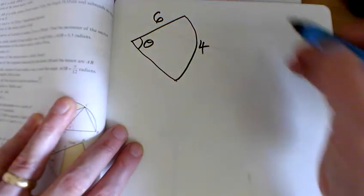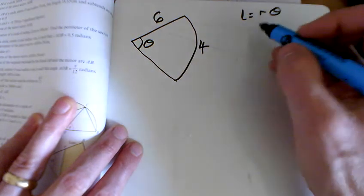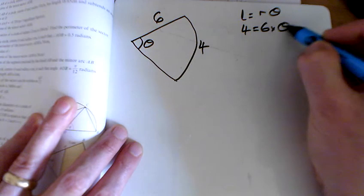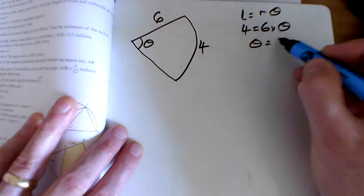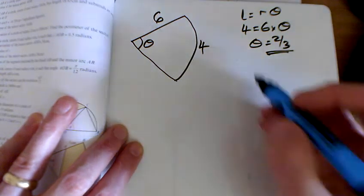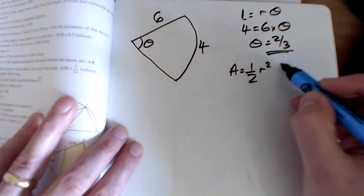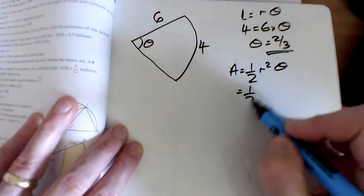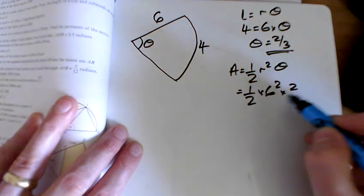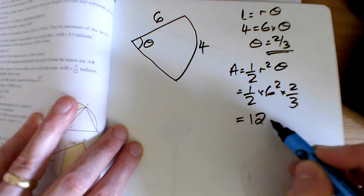From the first exercise we knew that the arc length was r times theta, so the arc length is 4, and that tells me that theta is 2 thirds. So if I want to find the area, the area is a half r squared theta, so I've got a half times 6 squared times 2 thirds, and that gives us 12 centimetre squares.